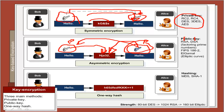There is also a one-way hashing method in which it should be difficult to reverse the encryption procedure. One-way hashing takes a message and creates a hash signature of it. Typical methods for this are MD5 and SHA.